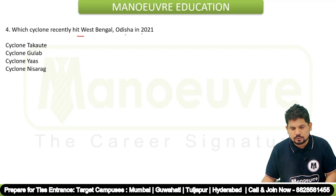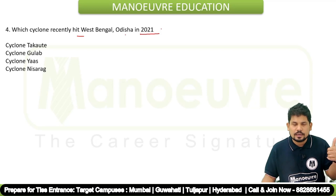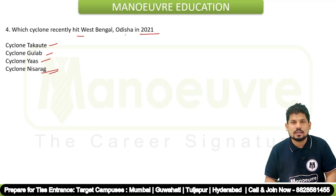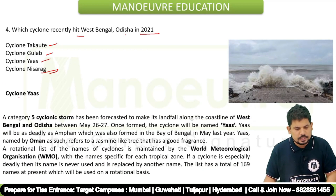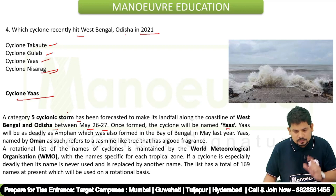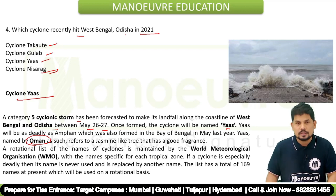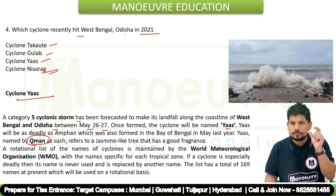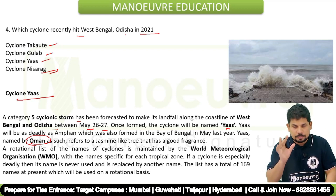Next: which cyclone recently hit West Bengal and Odisha in 2021? The options are Cyclone Tauktae, Cyclone Gulab, Cyclone Yaas, and Cyclone Nisarga. The correct answer is Cyclone Yaas — a Category 5 cyclone that made landfall along the coastlines of West Bengal and Odisha between May 26 and 27. Its name was given by Oman.